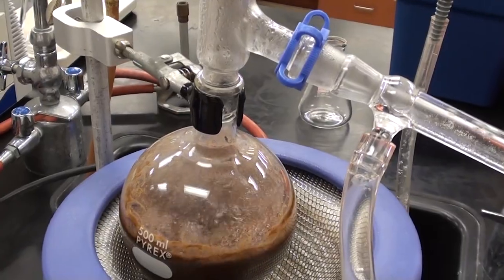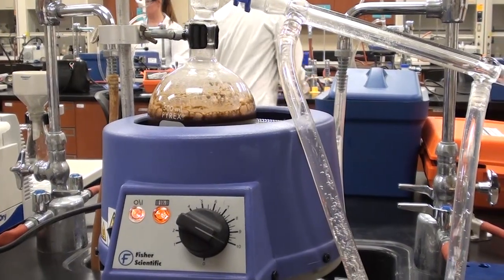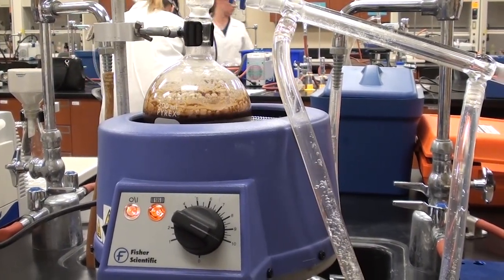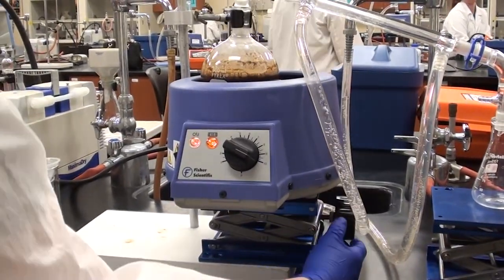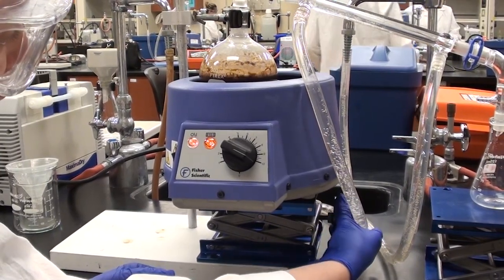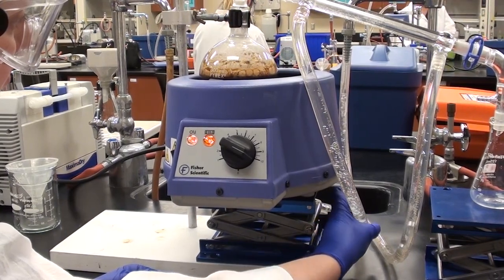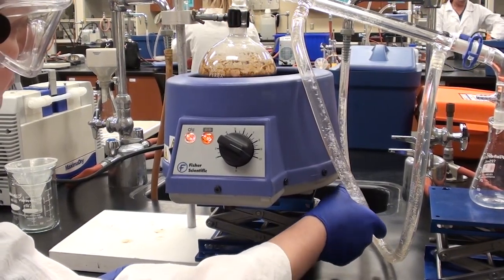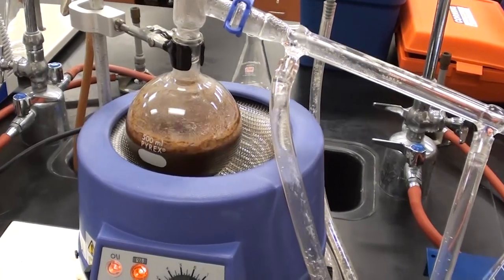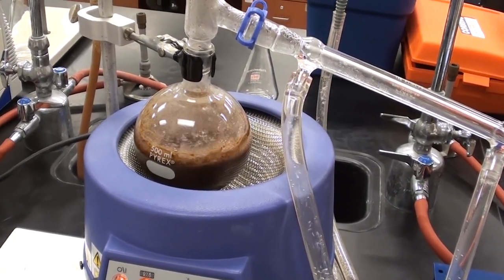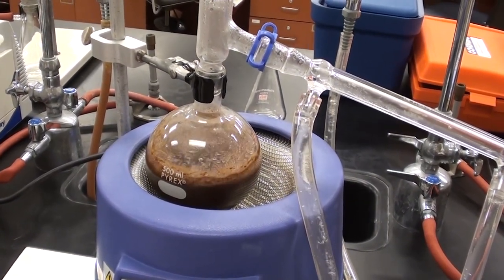If I was to put this directly back in the mantle, the whole thing would foam up and we'd have foam coming over through the condenser, and we don't want that. So we're going to leave it like this for now, and I'm going to ask Cassidy to very slowly raise the mantle. Keep it touching the side, and just raise it up maybe an inch. She's going to wait about five minutes, and then she's going to do it again. As long as it's not foaming, then we're in good shape.